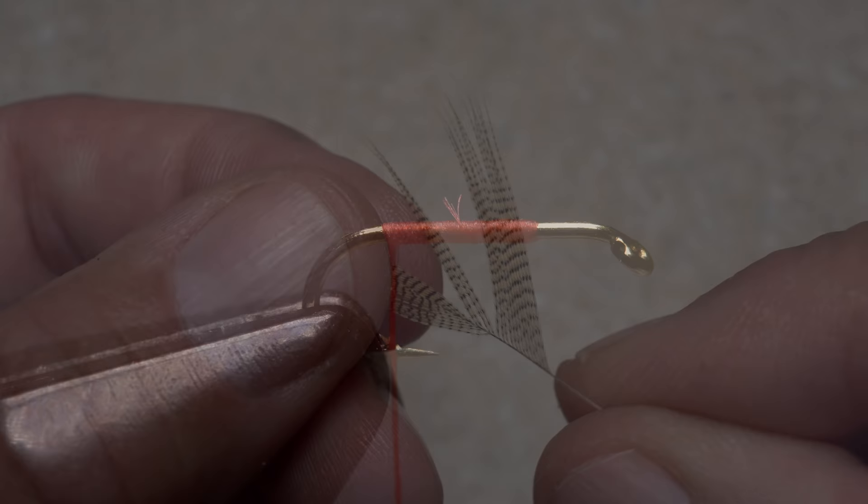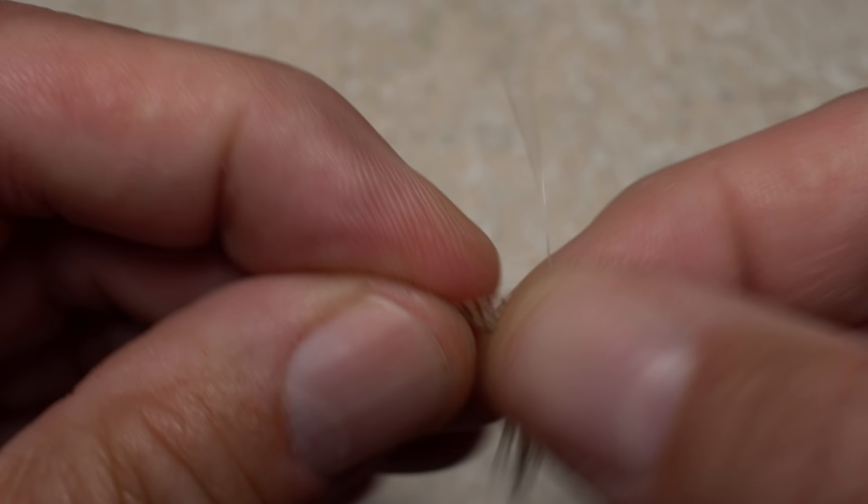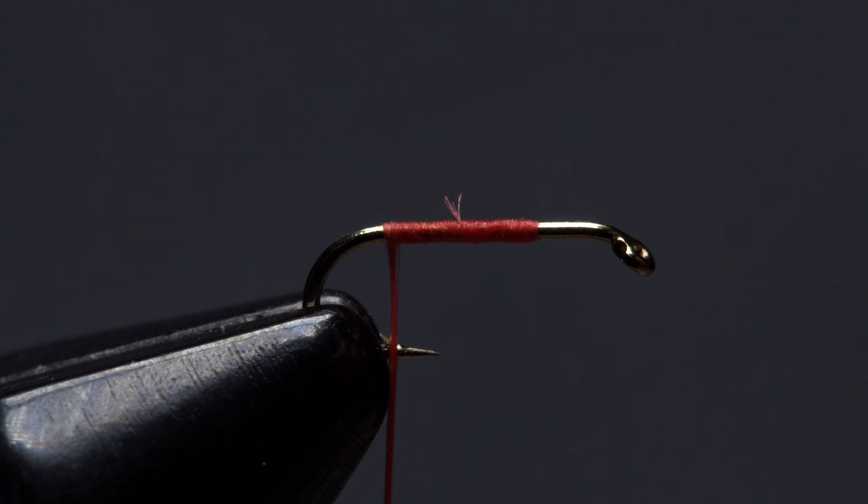Mallard flank is traditionally used to form the trailing shuck but here I'm going to go with wood duck as I like the finer darker markings and the more even tips. Strip a dozen or so fibers free from the stem and while keeping their tips aligned get hold of them in the fingertips of your right hand.